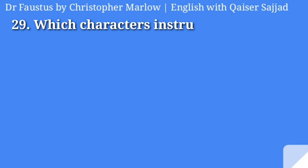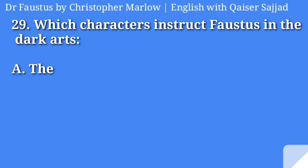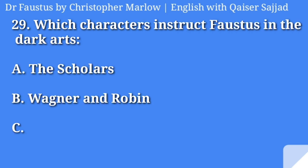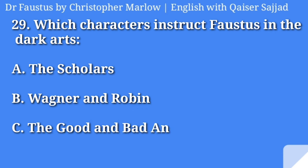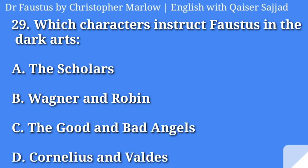Which characters instruct Faustus in the dark arts? The scholars Wagner and Robin, the good and bad angels, or Cornelius and Valdes? Answer is option D, Cornelius and Valdes.